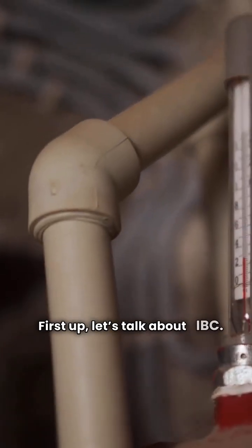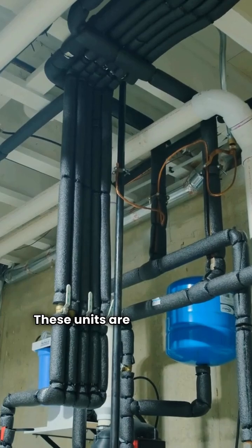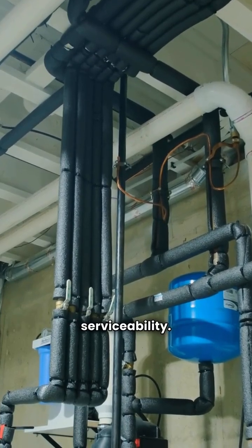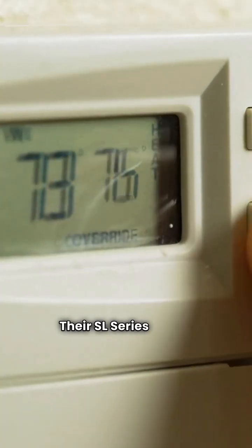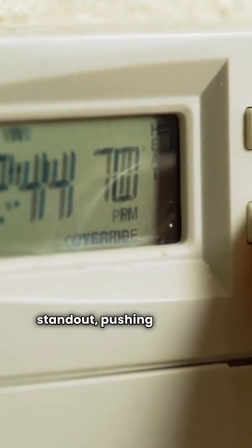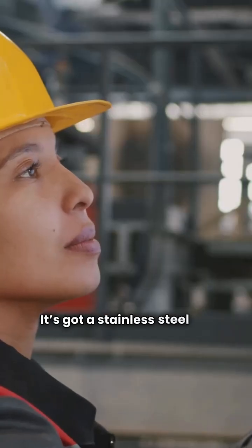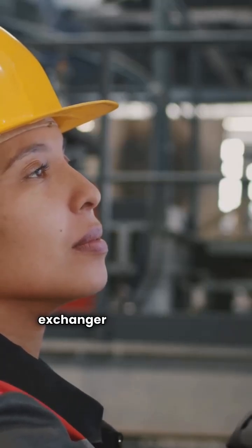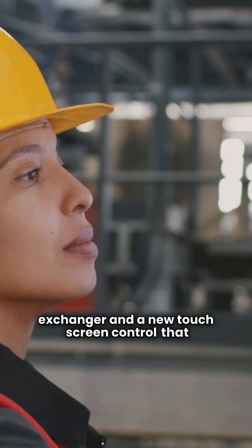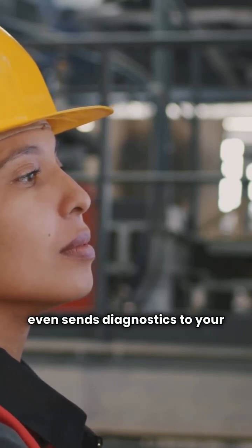First up, let's talk about IBC. These units are built with one thing in mind, serviceability. Their SL Series G3 is a standout, pushing 96% AFUE efficiency. It's got a stainless steel fire tube heat exchanger and a new touchscreen control that even sends diagnostics to your phone.